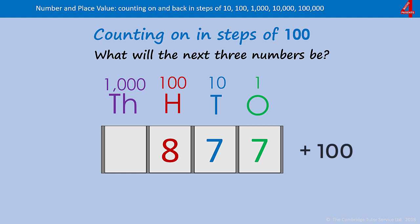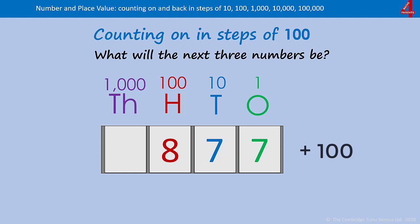The first thing to remember when counting on or back in hundreds: the tens and ones will always stay the same. So the seven tens and the seven ones won't change while we're counting on or back in steps of a hundred or anything bigger. Each time we count on a hundred or back a hundred, the hundreds column will change.